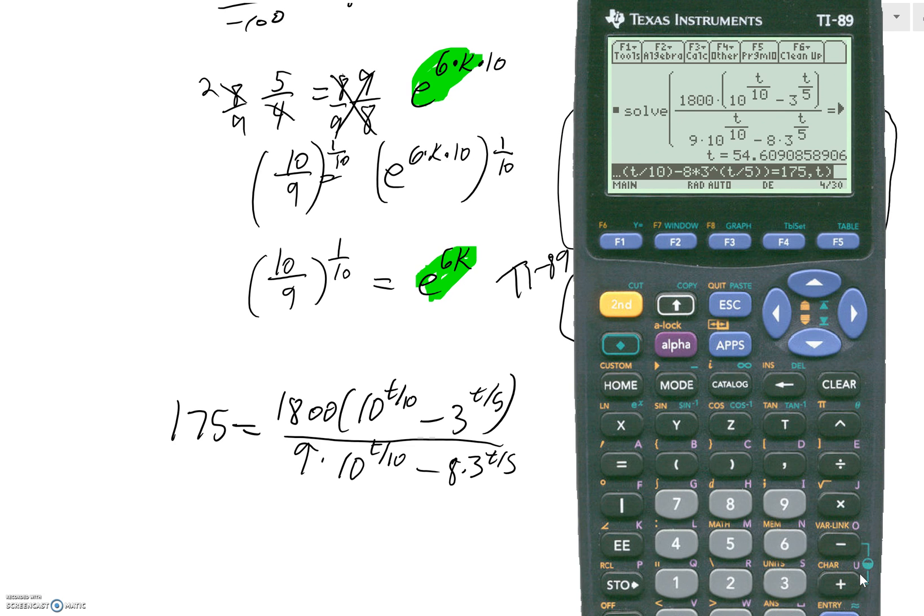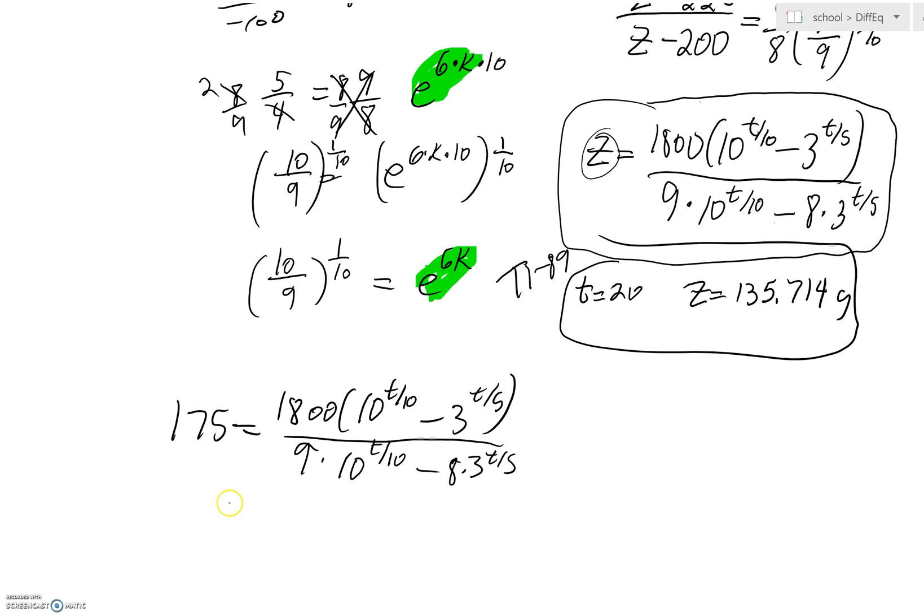So, evidently, we should get, as you can see here, about 54.609 minutes for Z to equal 175. Again, how did you get that with the 89?